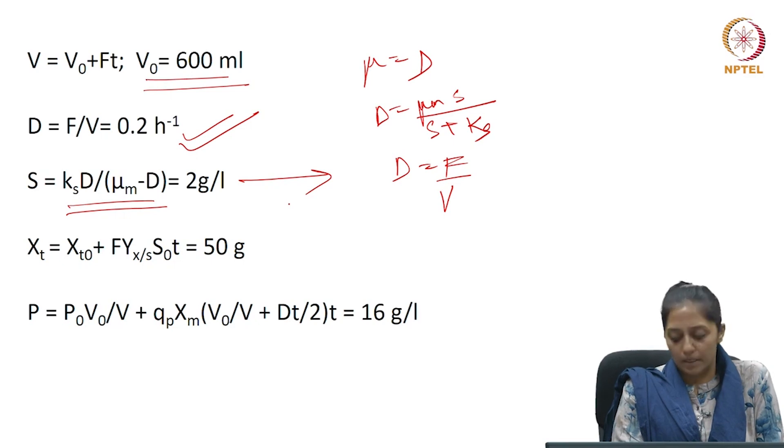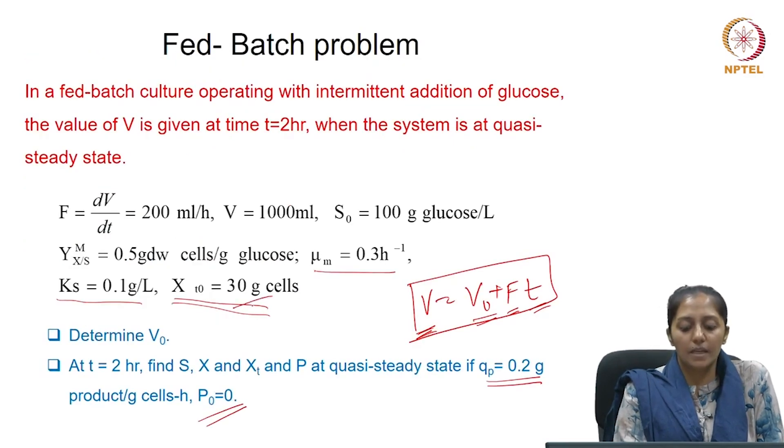We know that they have given 30 grams of cell at X_t₀ and we also know V₀, and we know it is quasi-steady state. So, will the concentration of the biomass keep changing with time? No.